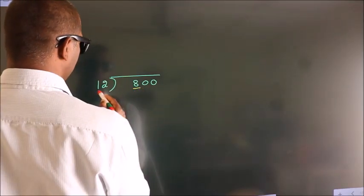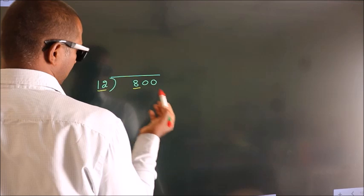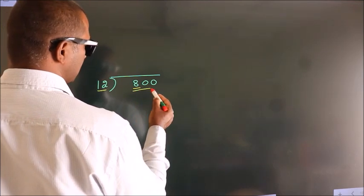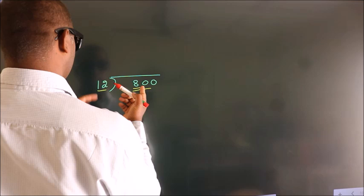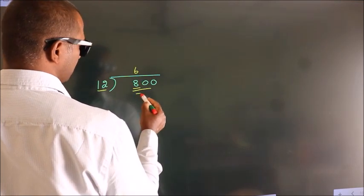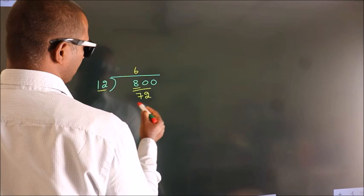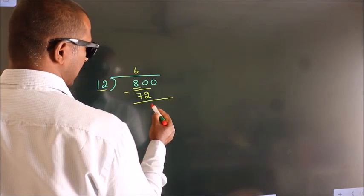Here we have 8. Here 12. 8 smaller than 12, so we should take two numbers: 80. A number close to 80 in 12 table is 12, 6, 72. Now we should subtract. We get 8.